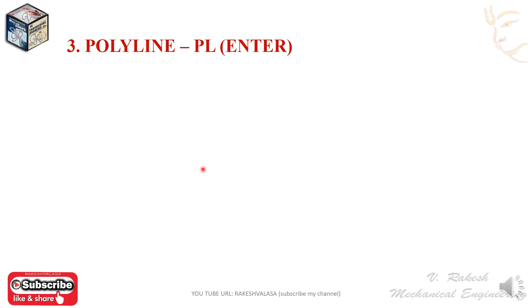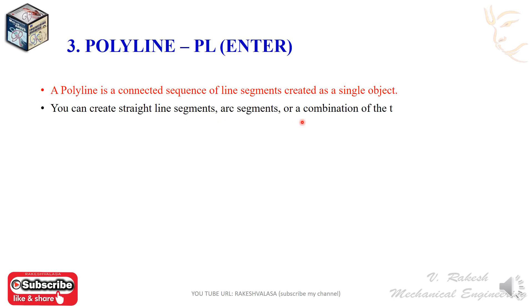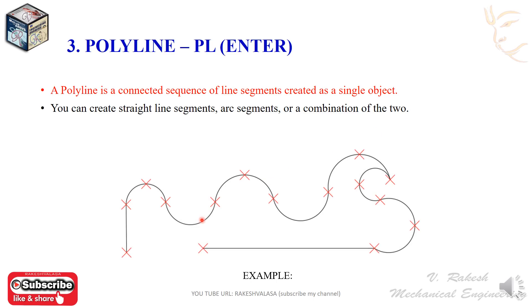The next command is polyline. The shortcut key is PL, Enter. A polyline is a connected sequence of line segments created as a single object. You can create straight line segments, arc segments, or a combination of the two. For example, this figure was drawn using polyline with both straight line segments and arc segments.